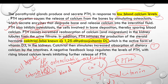Calcitonin function is the opposite of parathyroid hormone. Parathyroid hormone is activated by low blood calcium levels, whereas calcitonin is activated by high blood calcium levels.